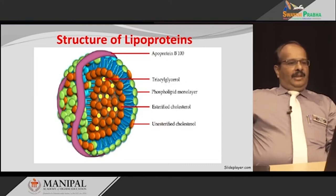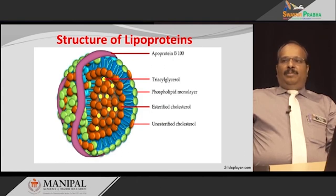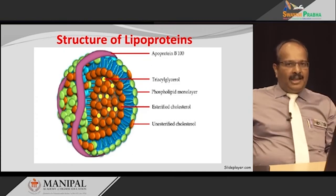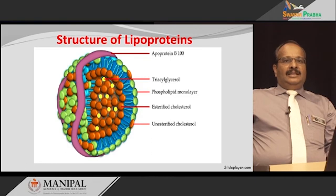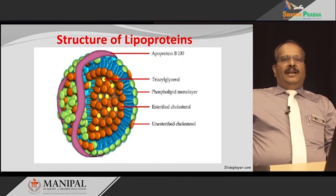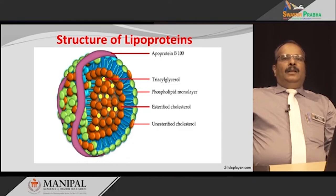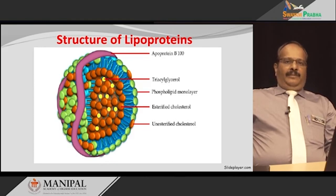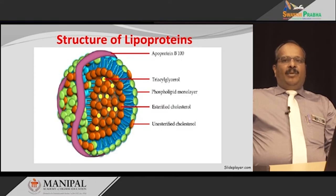Coming to the structure of lipoproteins. Lipoproteins are the macromolecular complexes of lipids and proteins. A typical lipoprotein consists of a central lipid core of triacylglycerol and cholesterol esters. It is surrounded by a monolayer of phospholipids and cholesterol molecules, arranged such that the polar molecules face the aqueous environment. The protein portion in the lipoprotein is called apoproteins.